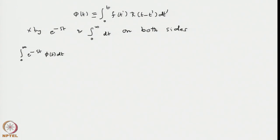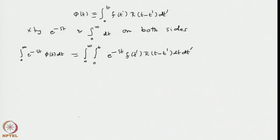The Laplace transform of phi(t) is the integral from 0 to infinity of e to the power minus st times phi(t) dt, and on the right-hand side we write an integration over t containing an inner integration over t prime from 0 to t, with the overall integrand being e to the power minus st times f(t prime) times r(t minus t prime) dt dt prime. It is now an integration over two variables, and we note it cannot be immediately simplified because the function r contains both t and t prime together. One cannot directly interchange the integrals; one must first integrate over t prime and then over t.